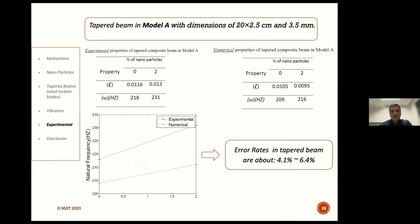This slide shows the comparison between the experimental properties and numerical properties of the tapered composite beam of Model A. After the comparison, the error rates in tapered beam Model A are about 4% to 6%. I think this comparison is very suitable and appropriate for conducting further research in this area.